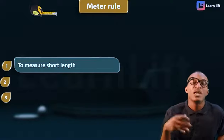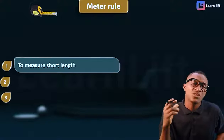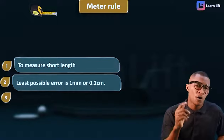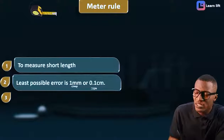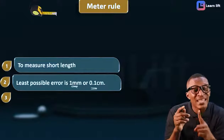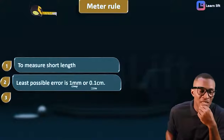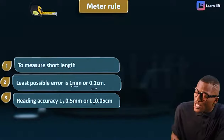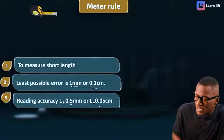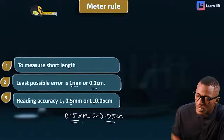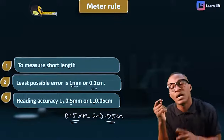When you want to measure the short length of something, you use your meter rule. The length can also be moderately long, but not extremely long. Number two, it has what we call the least possible error of 1 millimeter or 0.1 centimeter. In millimeter it is 1, but in centimeter it is 1 decimal place. Now, what is the reading accuracy? The reading accuracy of a meter rule is 0.5 millimeter or 0.05 centimeter.